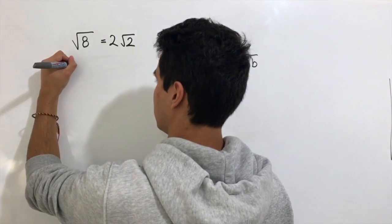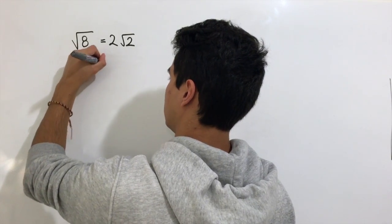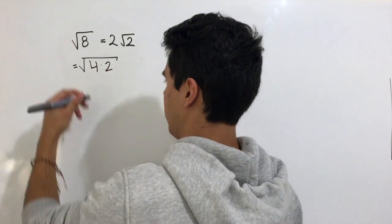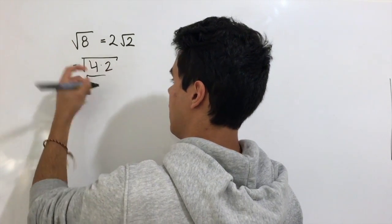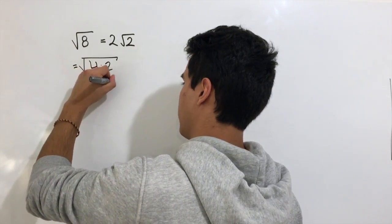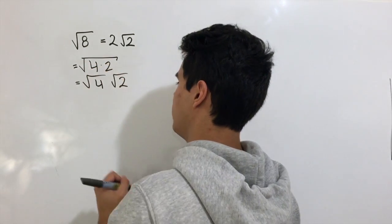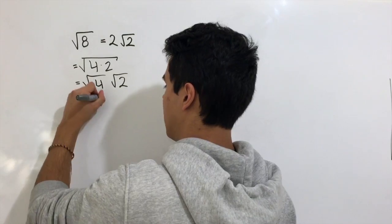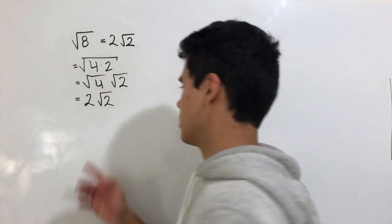In this example, we know that 8 is going to be equal to 4 times 2, and it can be written as the square root of 4 times the square root of 2. The square root of 4 is 2, and the square root of 2 we can't simplify, so we end up with 2 times the square root of 2.